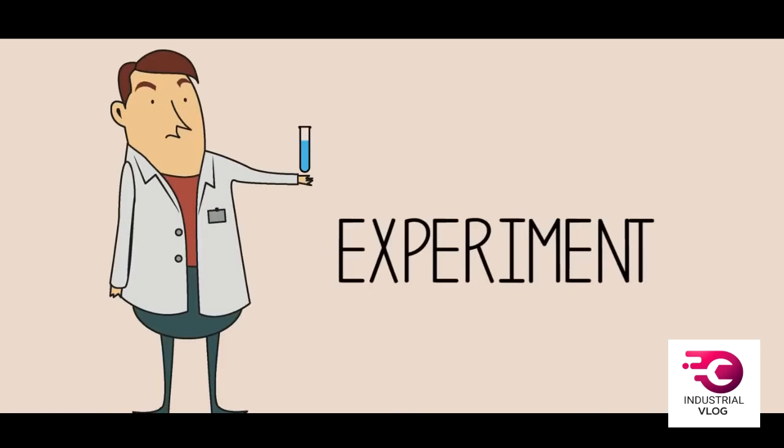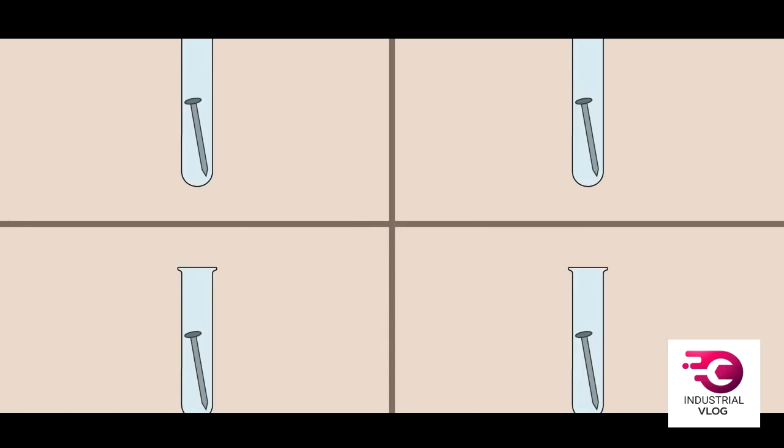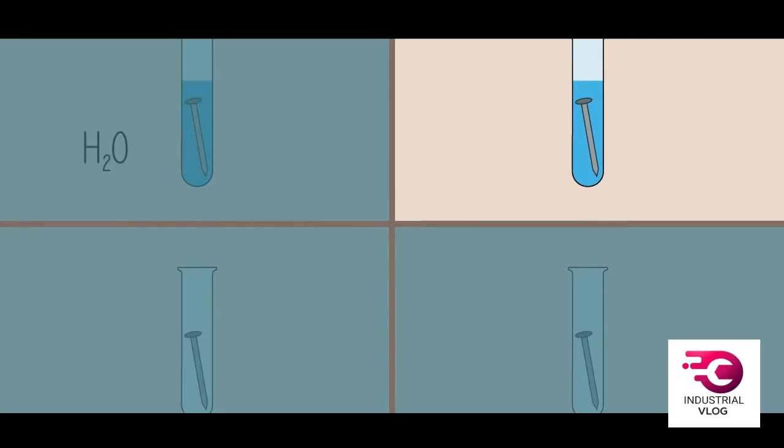We can demonstrate this using a simple experiment. Place an iron nail in four test tubes. Fill one with regular tap water until the nail is submerged. Fill another with regular tap water and add half a spoonful of sodium chloride, regular table salt. Shake from side to side to ensure that sodium chloride fully dissolves.